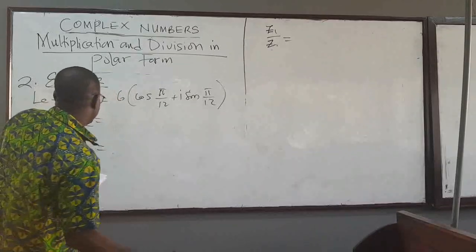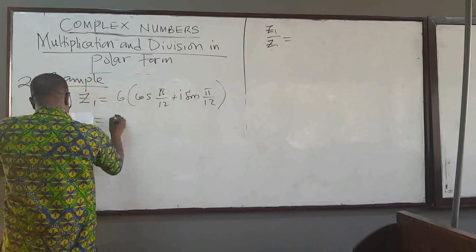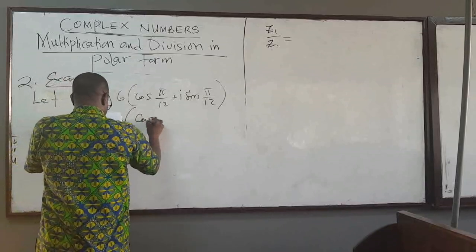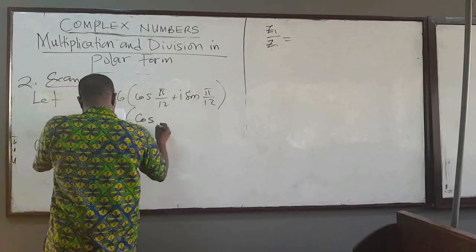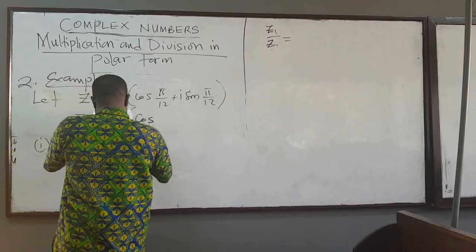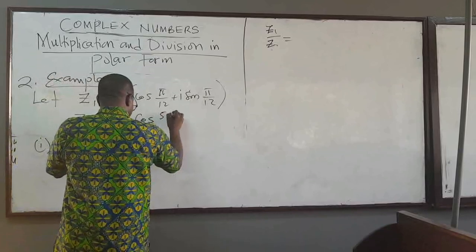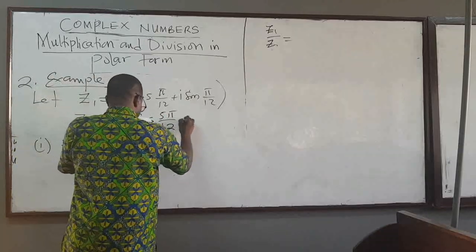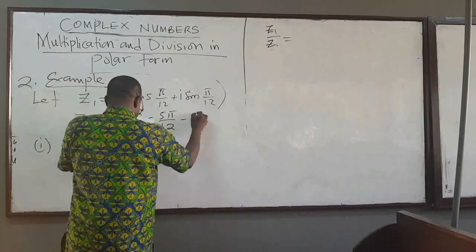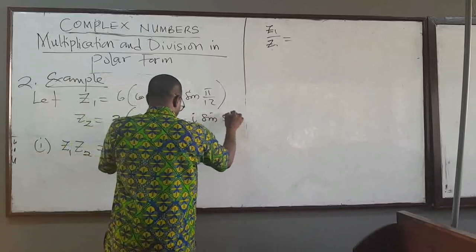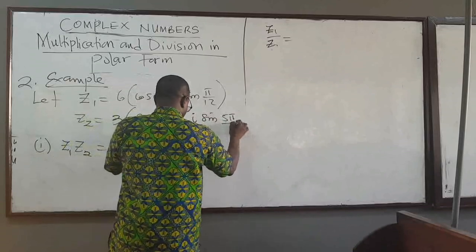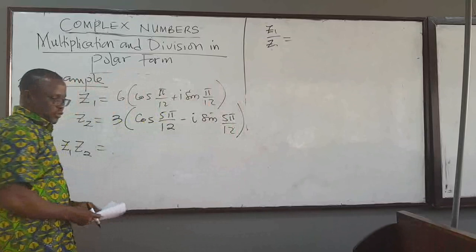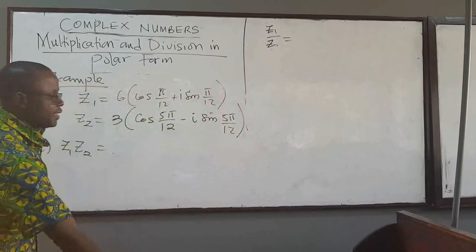Now for Example 2, let z1 equal 6 times cosine of pi over 12 plus i sine of pi over 12, and let z2 equal 3 times cosine of 5 pi over 12 minus i sine of 5 pi over 12.